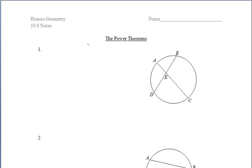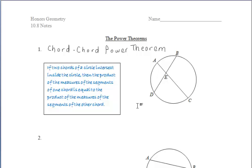The following theorems involve products of the measures of segments. For the first diagram, we notice we have two chords intersecting. The chord-chord power theorem states that if two chords of a circle intersect inside the circle, then the product of the measures of the segments of one chord is equal to the product of the measures of the segments of the other chord.